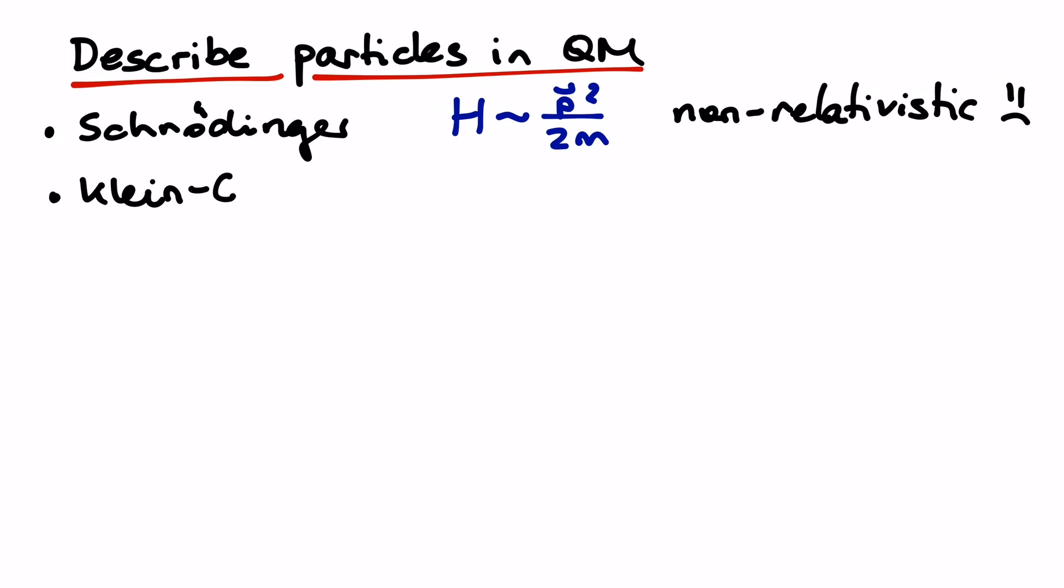The Klein-Gordon equation has a relativistic energy-momentum relation, where the energy is given by e squared equals p squared plus m squared.